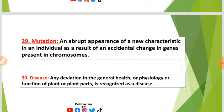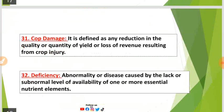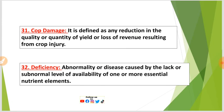Number thirty: Disease — any deviation in the general health, physiology, or function of a plant or plant parts. Number thirty-one: Crop damage — defined as any reduction in the quality or quantity of yield, or loss of revenue resulting from crop injury.